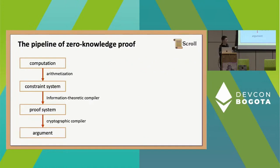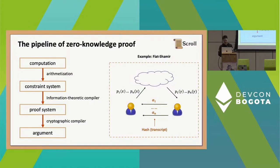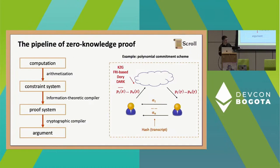After you get this IOP, to make it practical you also need a cryptographic compiler to compile down to an argument that can be implemented. In the polynomial IOP model, one thing you can do is instantiate the challenge model using Fiat-Shamir — you hash the transcript as the next round challenge. Another thing is to replace the magical oracle with a concrete polynomial commitment scheme. For example, there is KZG, FRI-based, Dory, Dark, and many other polynomial commitment schemes. You commit to a polynomial and later open it at a random point. After those stages, you finally get your protocol.